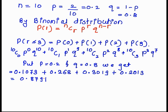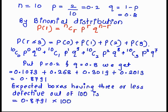But we have to calculate expected boxes having three or less defective out of the hundred. That can be calculated by 0.8791 times 100, so we get 87.91, approximately 88 boxes containing less than or equal to 3 defective.